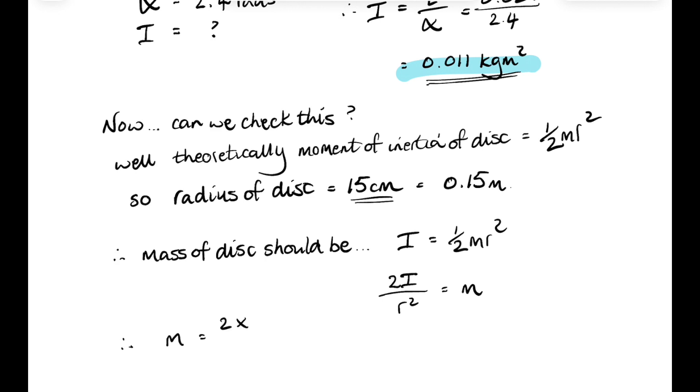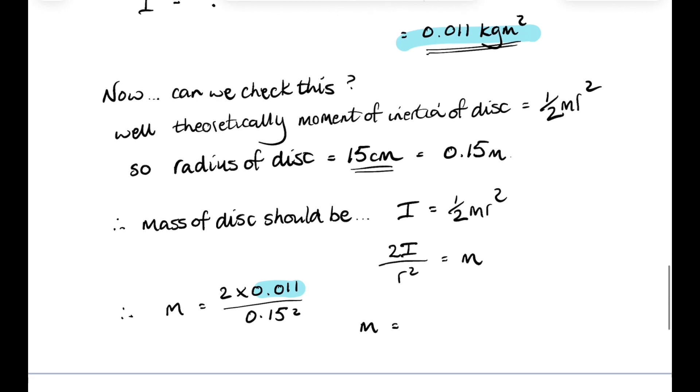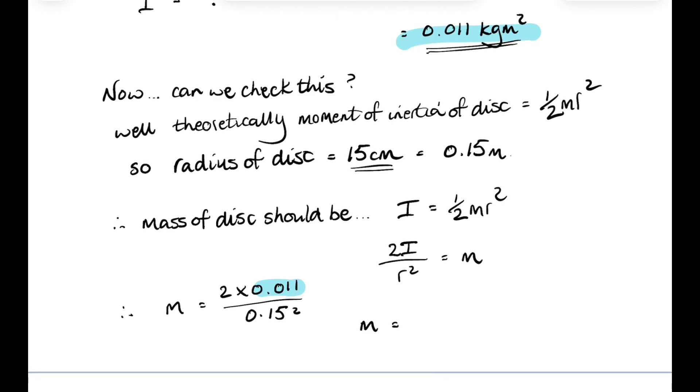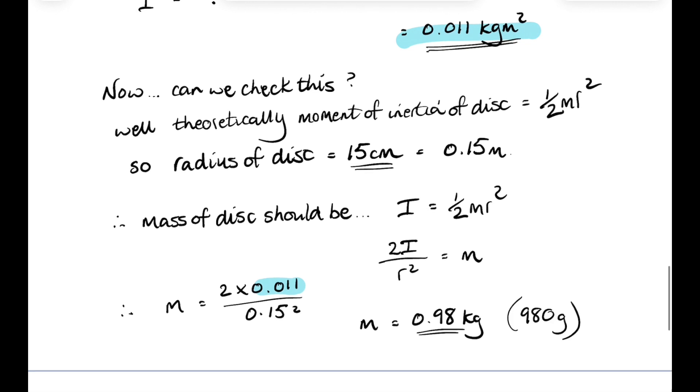So let's sub in what we know. The moment of inertia was 0.011 and the radius of the disk was 0.15 meters. And don't forget to square that. And that gives us an expected mass of the disk of 0.98 kilograms or 980 grams.